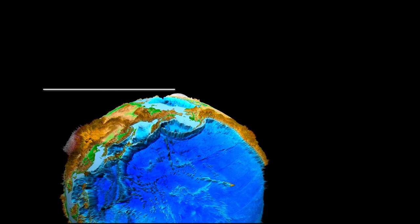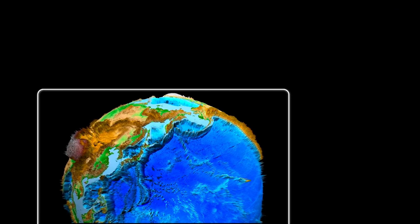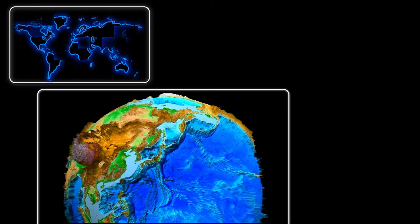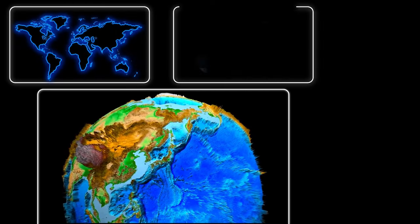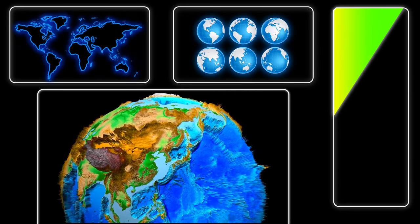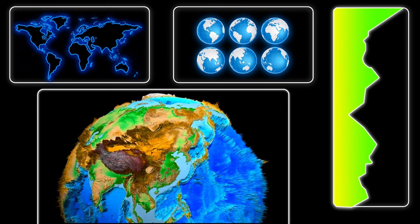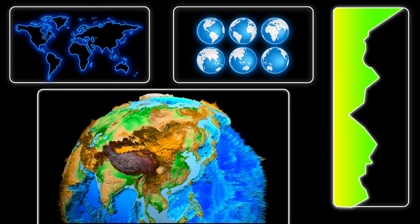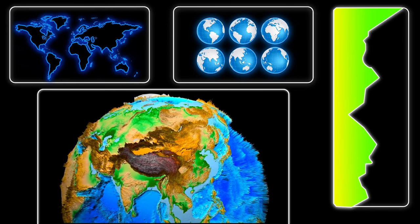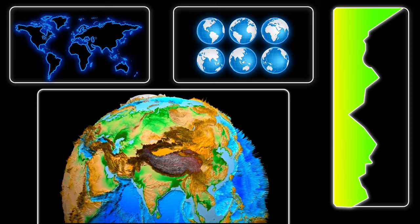In reality, the earth isn't a smooth ball, so tides are also affected by the presence of continents, the shape of the earth, and the depth of the ocean in different locations. The timing and heights of the tide near you will be affected by those additional elements.